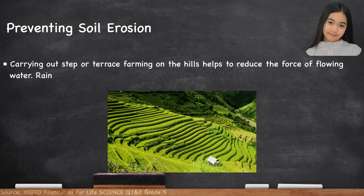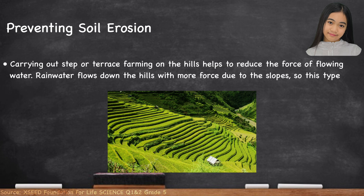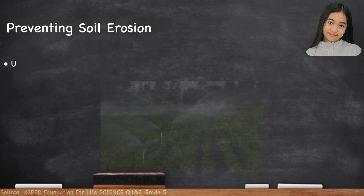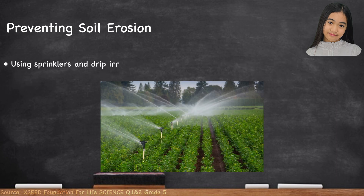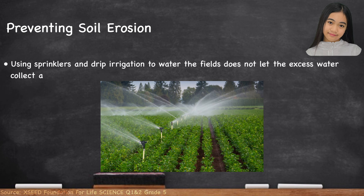Terrace farming on hillsides helps to reduce the force of flowing water, as rainwater flows down slopes with more force; this type of farming slows it down. Using sprinklers and drip irrigation to water the fields does not let excess water collect and wash away the soil from the field.